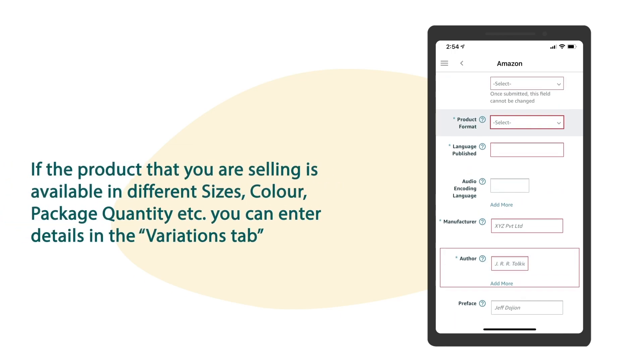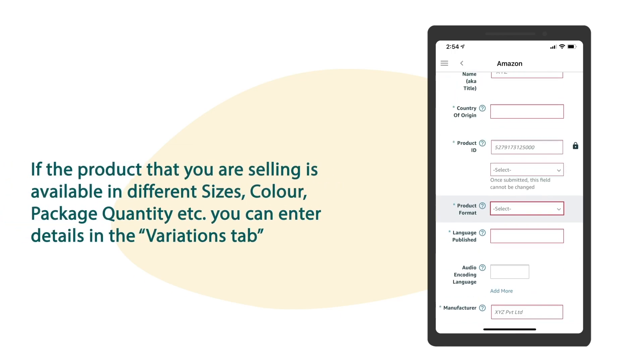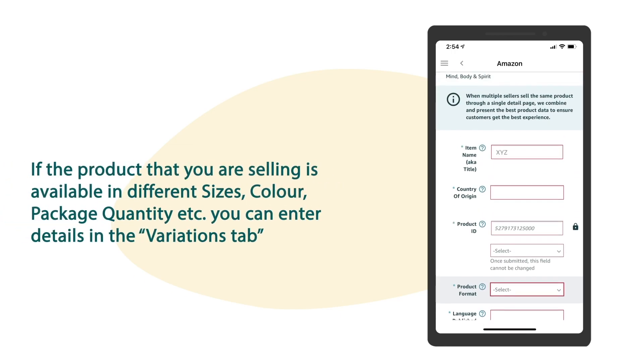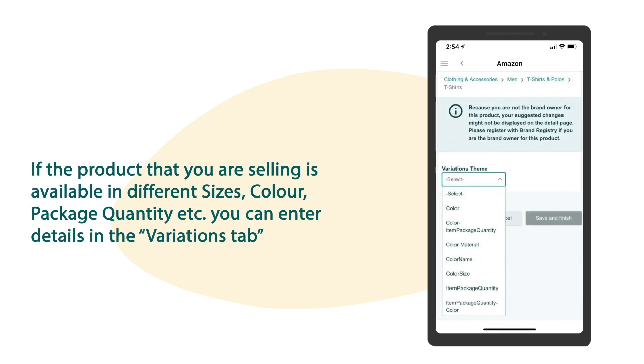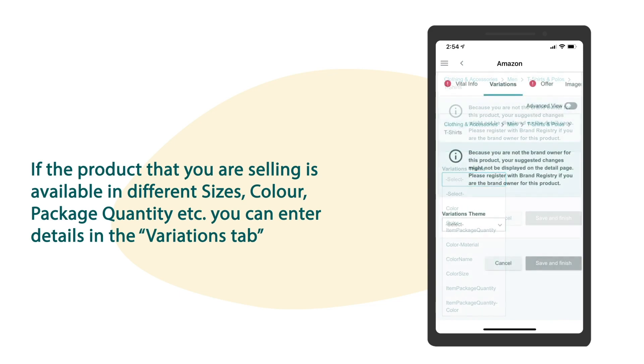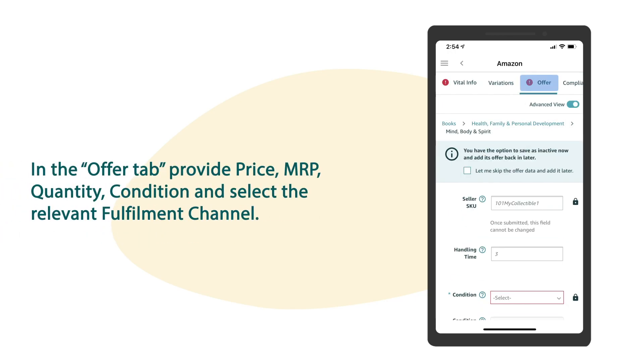If the product that you are selling is available in different sizes, color, package quantity, etc., you can enter the details in the variation tab.